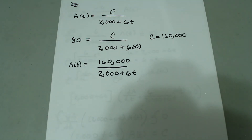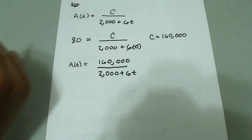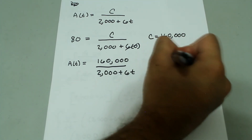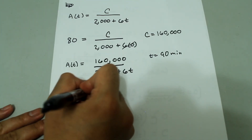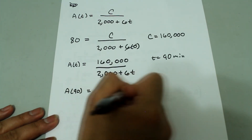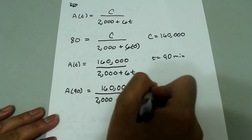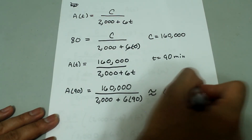Now we need to find the amount of salt at 1.5 hours. Be careful: the rates were given in liters per minute, so the time must also be in minutes. Converting 1.5 hours gives 90 minutes. So a of 90 equals 160,000 over (2000 plus 6 times 90), which comes out to approximately 62.992 kilograms.